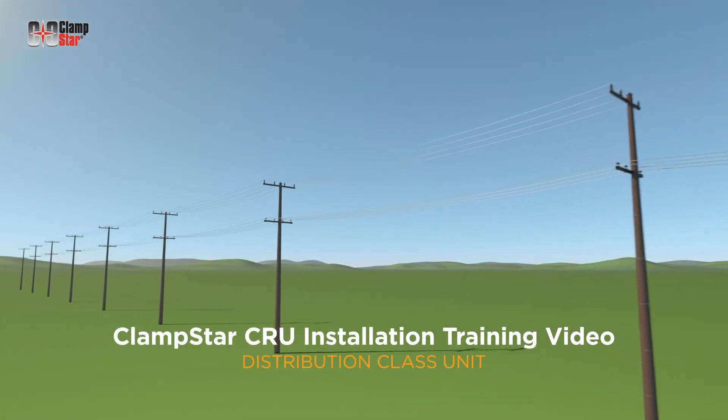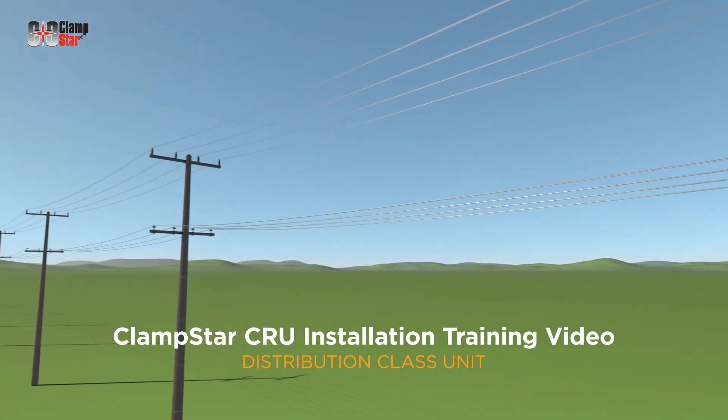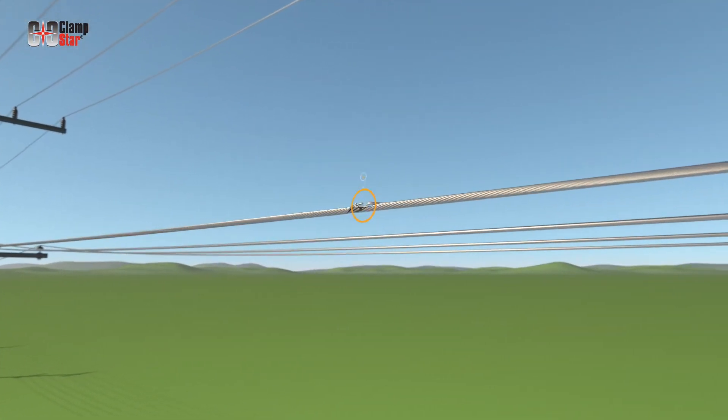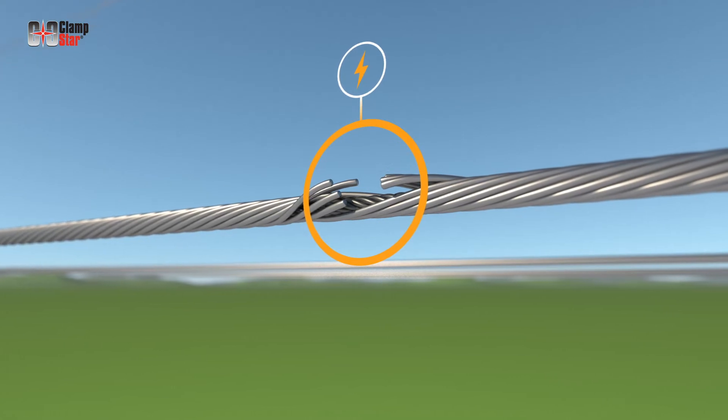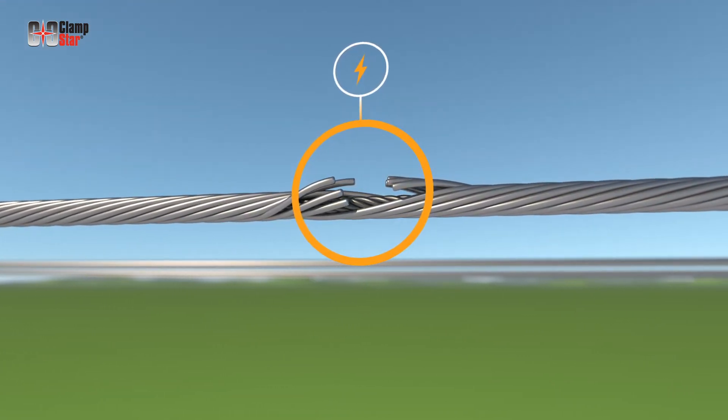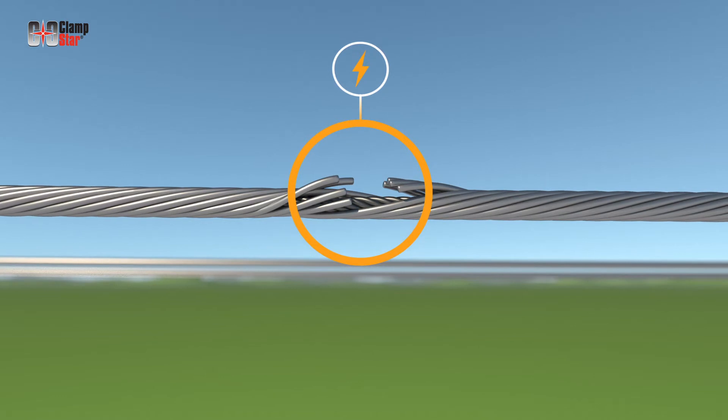ClampStar Repair Unit Installation Training Video Distribution Class Unit. Conductor damage can be caused by a variety of issues such as gunshot, lightning, tree branches and spacer dampers.